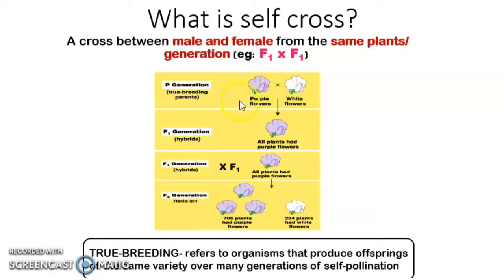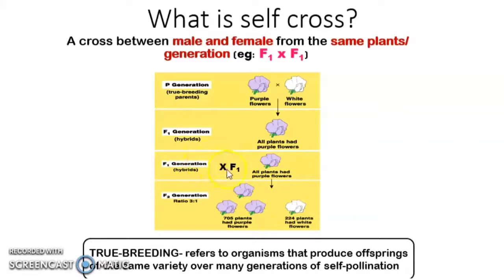When you do the crossing between the homozygous dominant and homozygous recessive parents, for the F1 generation you will get all plants with purple flowers. Then, if the question asks you to show the self-cross, you have to cross F1 with F1 — just write F1 cross F1. When you cross to get the F2 generation...